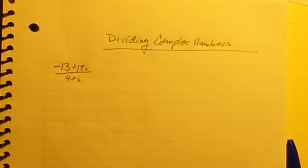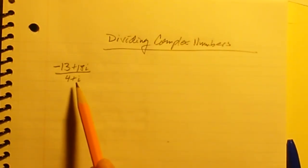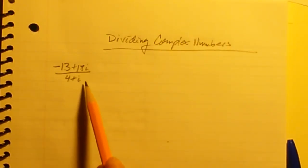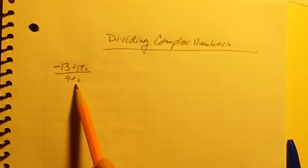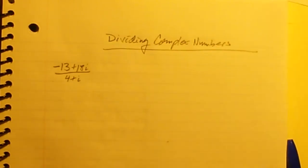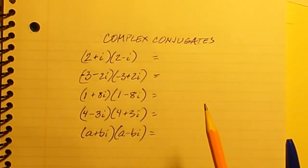Hey algebra students, today we're going to talk about dividing complex numbers. We're going to solve problems like this: negative 13 plus 18i divided by 4 plus i. But before we get going on this, we actually have to look at something else first — we have to look at the idea of complex conjugates.